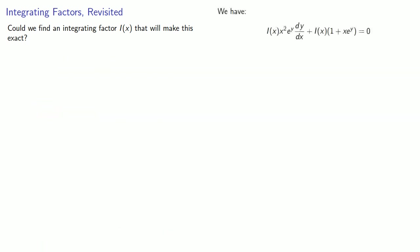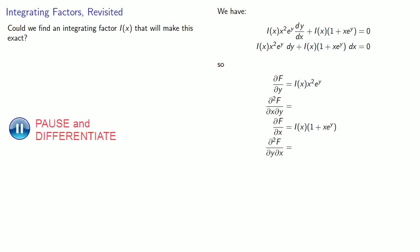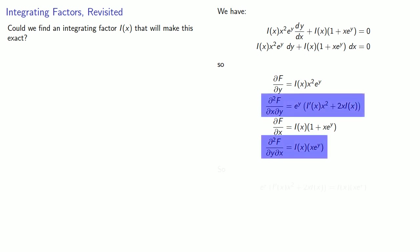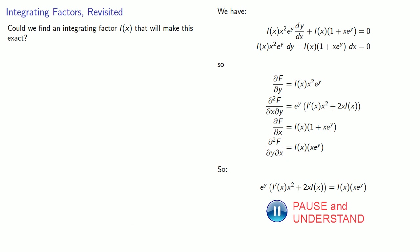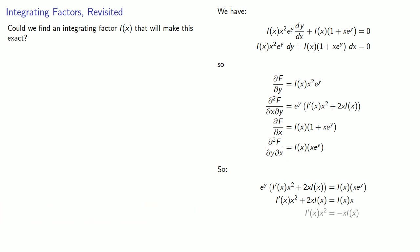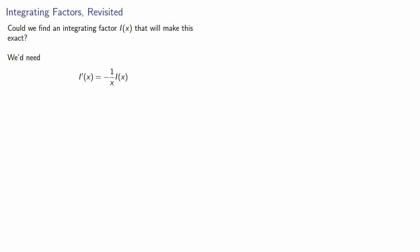We'll take our differential equation and multiply it by our integrating factor, then separate the differentials. The coefficient of dy must be the partial of f with respect to y, and the coefficient of dx must be the partial with respect to x. We find the mixed partial derivatives and set them equal to each other. Both sides have a factor of e to the y, which is never zero, so we can divide by it and get all the x·i(x) terms on the right-hand side. So the derivative of i(x) must be minus 1 over x times i(x) itself.